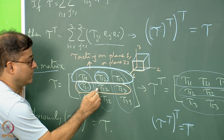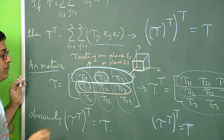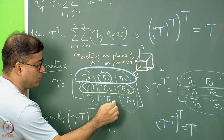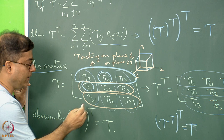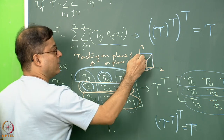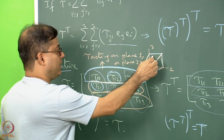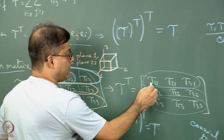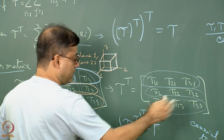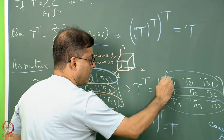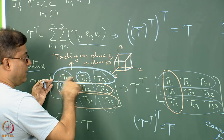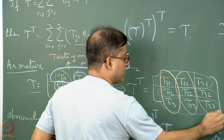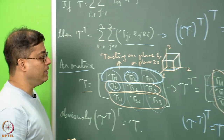Similarly, tau_21, tau_22, tau_23 share first suffix 2 — all three act on plane 2. And tau_31, tau_32, tau_33 share first suffix 3 — all three act on plane 3. When we take the transpose, the rows become columns: the first column tau_11, tau_21, tau_31 now indicates stresses acting on plane 1; the second column on plane 2; the third column on plane 3. The meaning of the rows changes: in the transposed matrix, the second suffix is common within a row, so the first row indicates stresses all acting along direction 1.